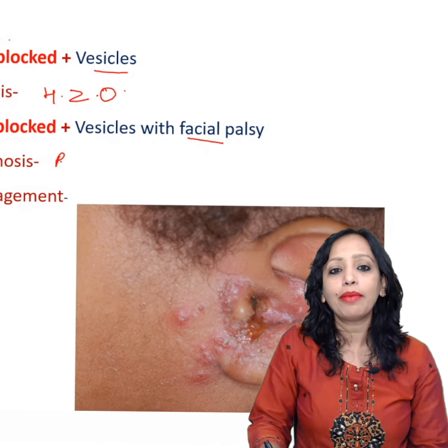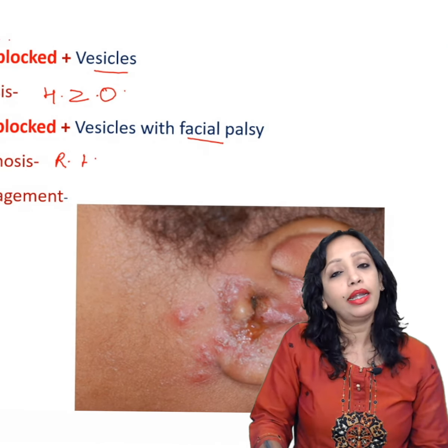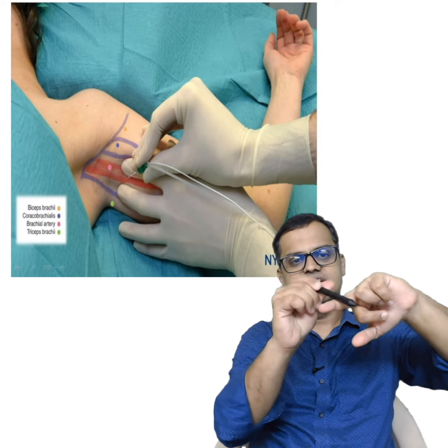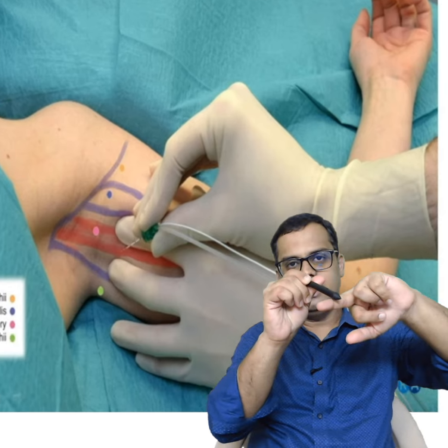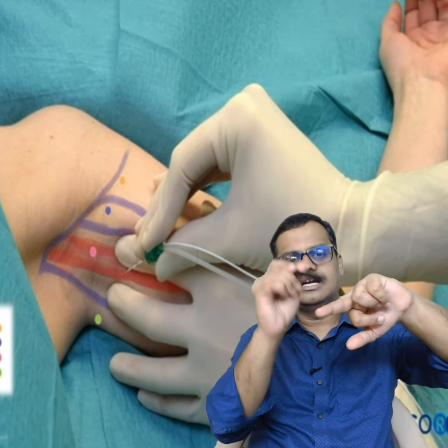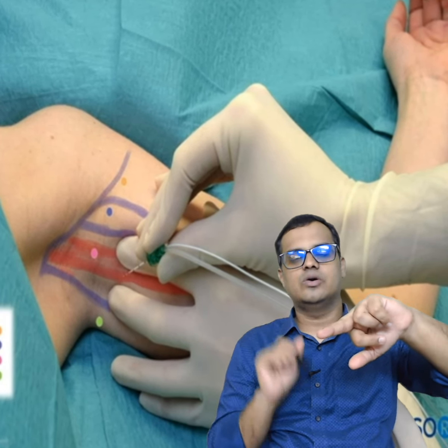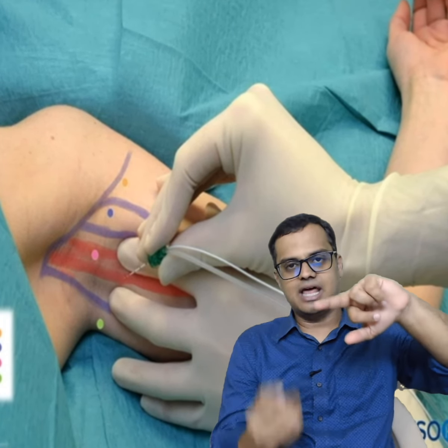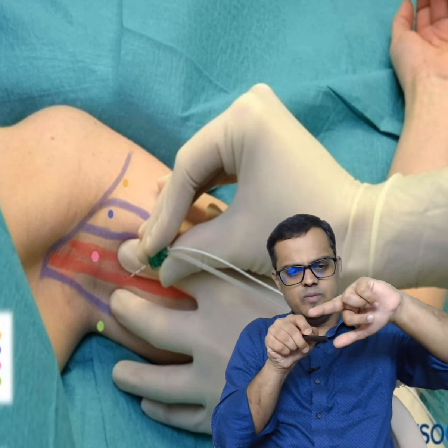If it is along with facial palsy, then we call it Ramsay Hunt syndrome. To inject the needle, go above it, inject the drug, and you can block that region. Below it, you can go behind it and block that region as well.